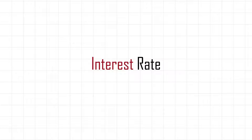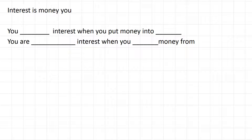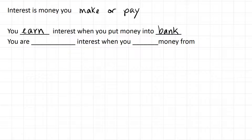Now that we've worked with percent, we're going to use our percent skills in calculating and dealing with interest rates. Interest is money that you either make or pay — it goes both ways. You can earn interest when you put money into a bank account and the bank pays you a little bit of money back. You are charged interest when you borrow money.